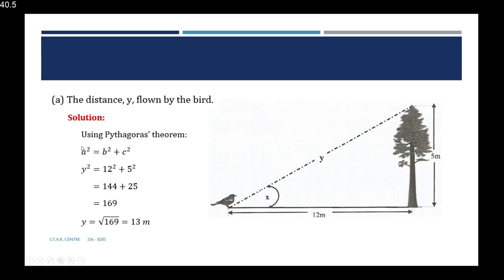Using Pythagoras' theorem, a squared equals b squared plus c squared, where a squared is always the hypotenuse. This gives y squared equals 12 squared plus 5 squared, which is 144 plus 25, equal to 169. Therefore y equals the square root of 169, which is 13 meters.